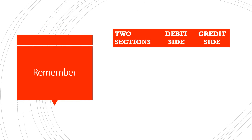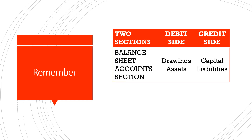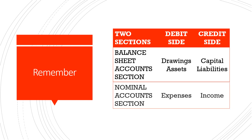Always remember that the trial balance has two sections and two sides: the debit side and the credit side. The first section is the balance sheet account section, where we have on the debit side the balances for drawings and assets, and on the credit side the balances for accounts and creditors. The next section is the nominal account section, where we have the balances of expenses on the debit side and the balances of income on the credit side.